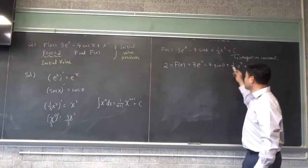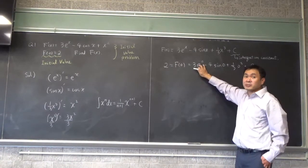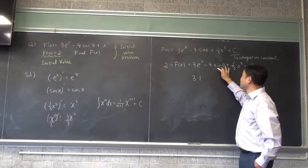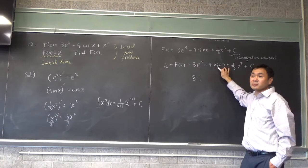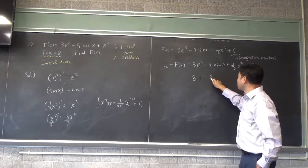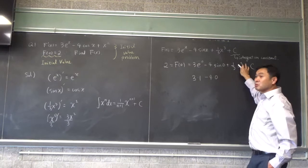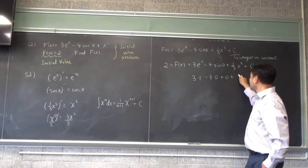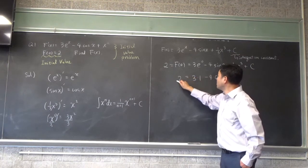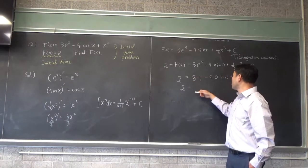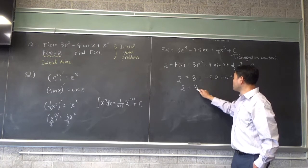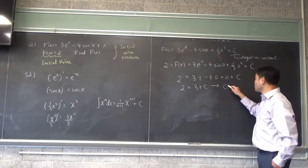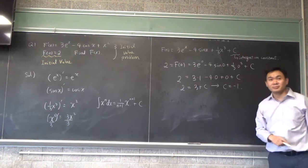Now evaluate all of this. What's e to the 0th power? 1. What's sine of 0? 0. So 4 times 0 is 0. And 0 cubed is 0, so one-third times 0 is also 0. So you have 3 plus c equals 2. Therefore, if you subtract 3, you get c equals negative 1.